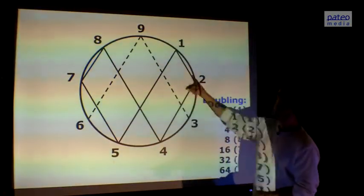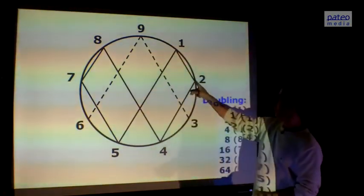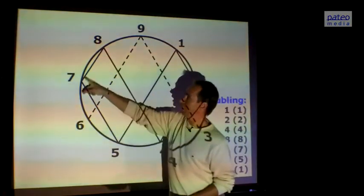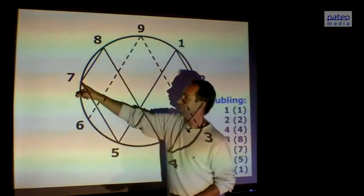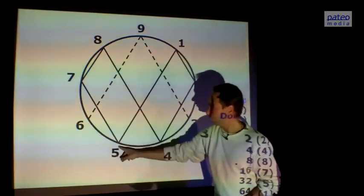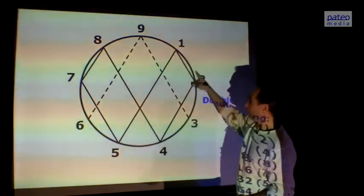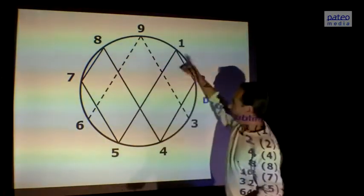If you look at that, then you see the double of 1 is 2, double of 2 is 4, double of 4 is 8, double of 8 is 16 which is 7, double of 16 is 32 which is 5, and the double of 32 is 64, which is 1 again. This goes on infinitely.